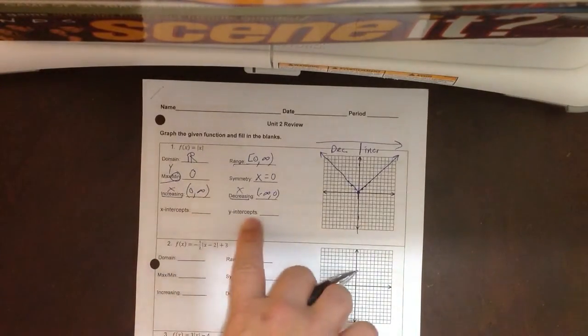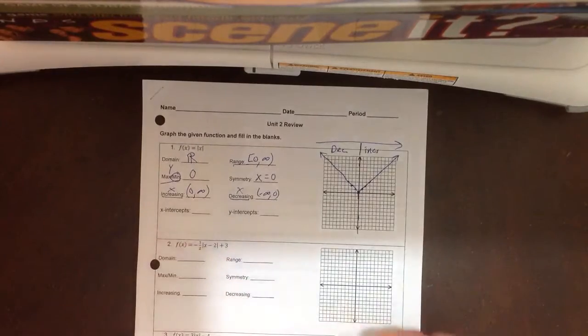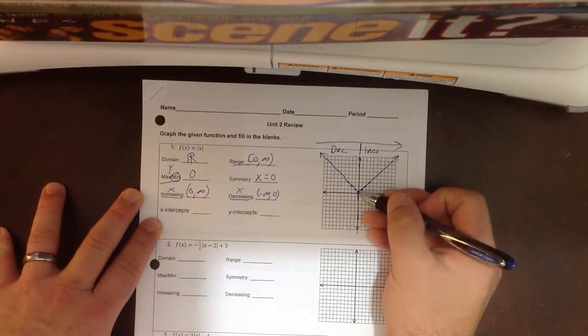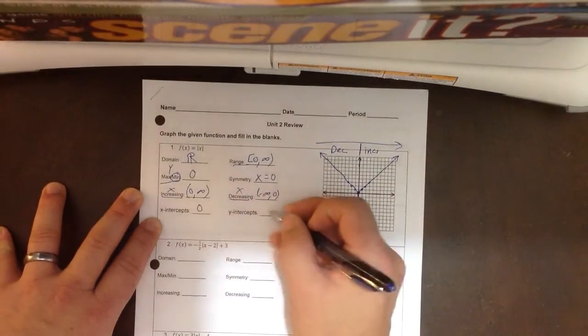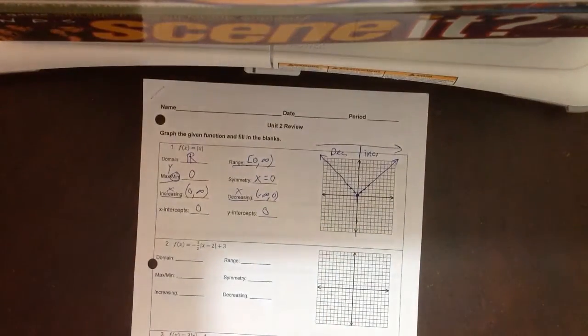Now, we haven't had you do this a lot on all of these, but you do need to know this for the parent function. The x and y intercept are both at 0. It starts at the origin, 0, 0.